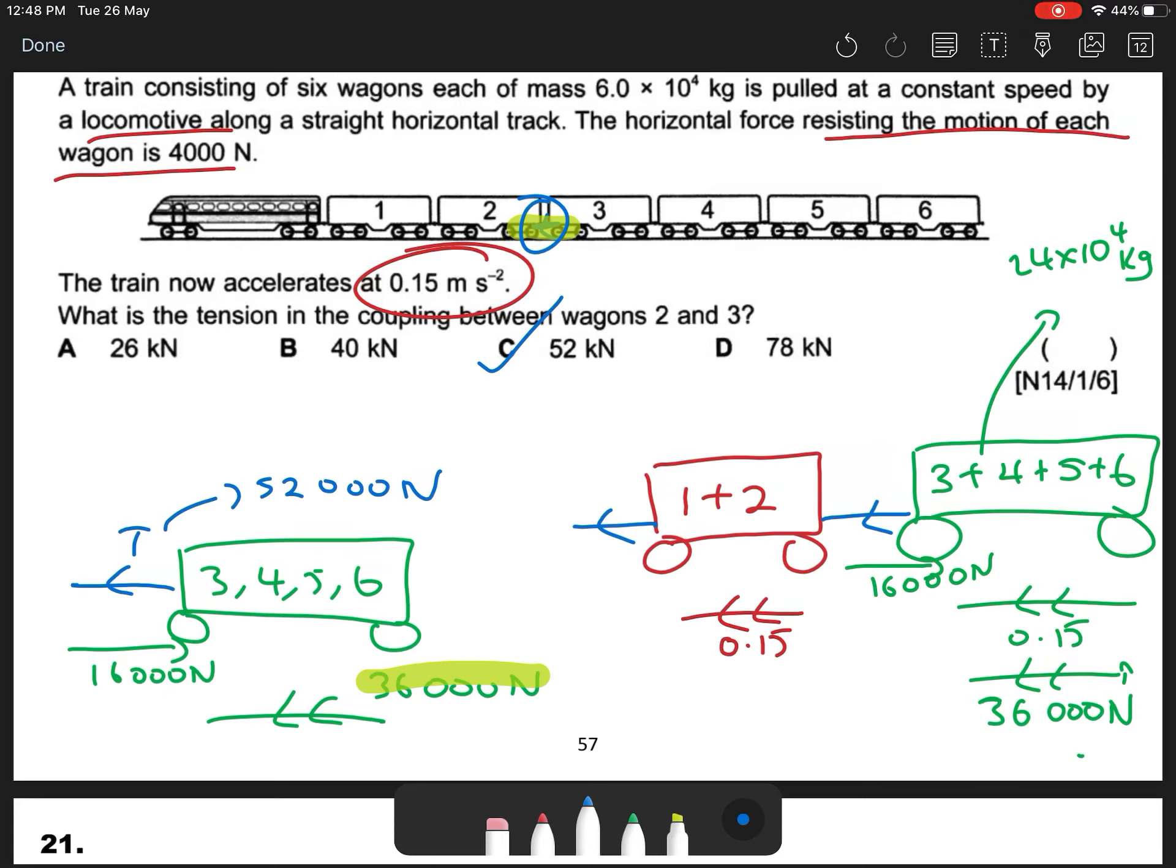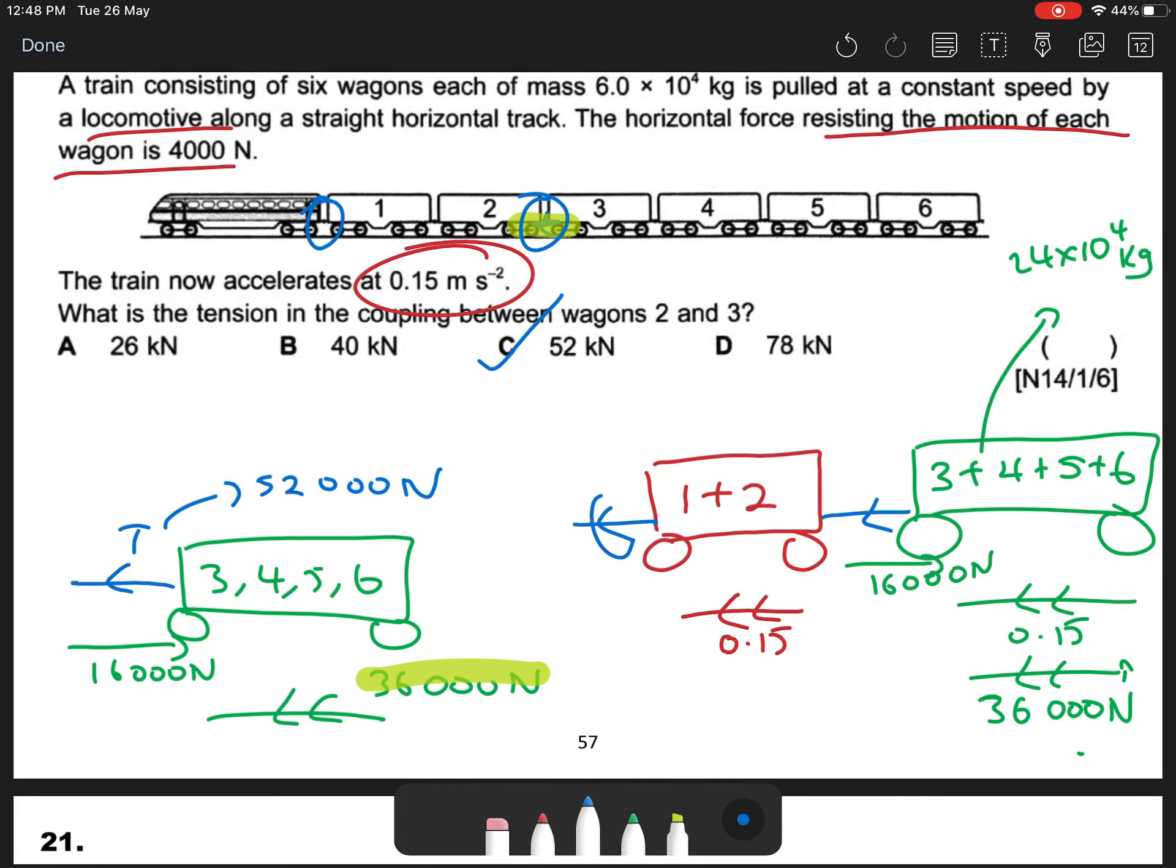Okay, so the question is why don't I use the red wagons 1 and 2? Because 1 and 2 are connected by this tension. The locomotive tension is a very big unknown number.